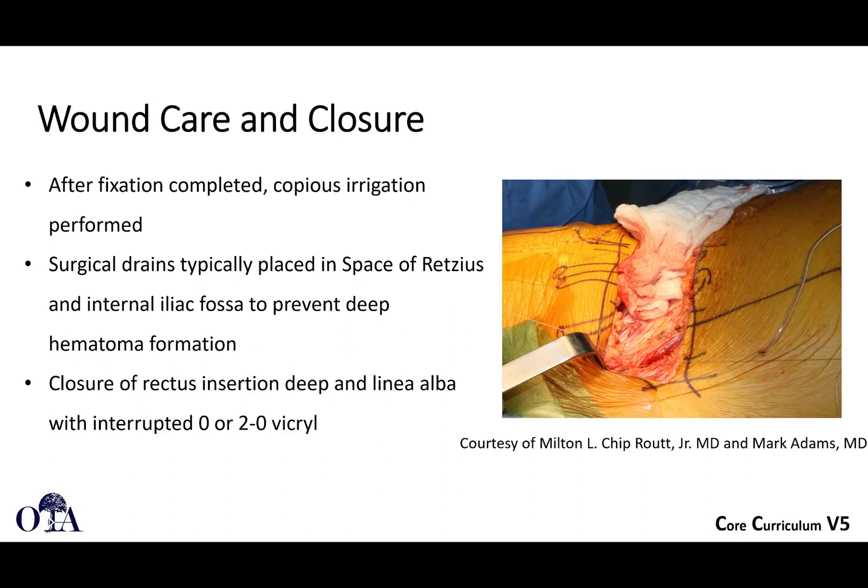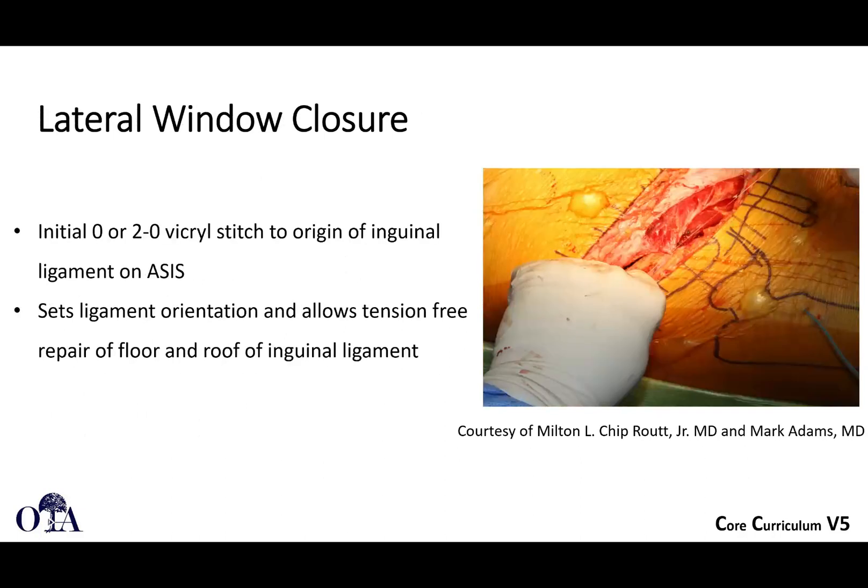You will close the rectus insertion and linea alba with interrupted suture. The lateral window is also repaired back anatomically — this helps to set the ligament orientation and allows tension-free repair of the floor and roof of the inguinal canal. Watch for your lateral femoral cutaneous nerve unless you've already divided it.